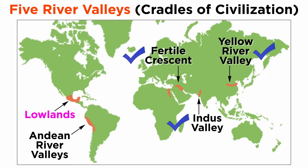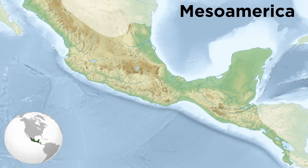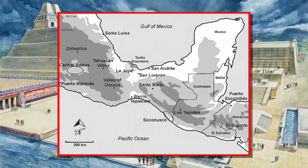Civilization in North America began in a region called Mesoamerica, which includes the countries of Mexico, Guatemala, and Honduras. Like in other regions, there are broad developments of urbanism and complexity around Mesoamerica before the emergence of the first civilization.